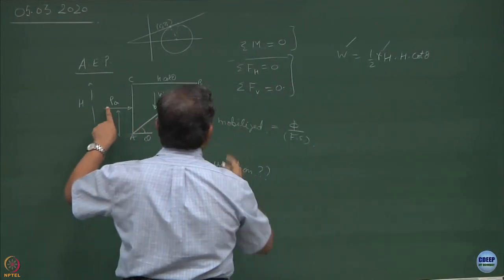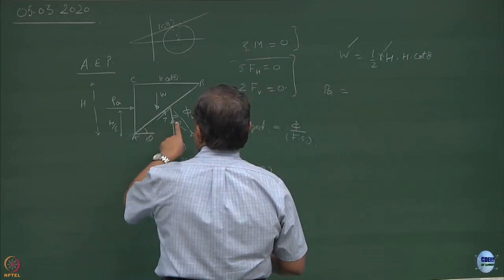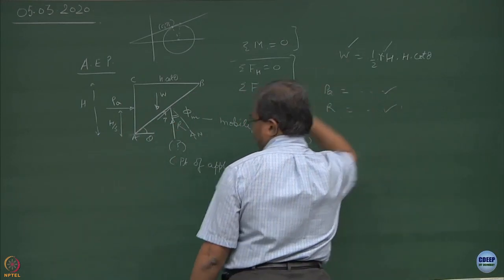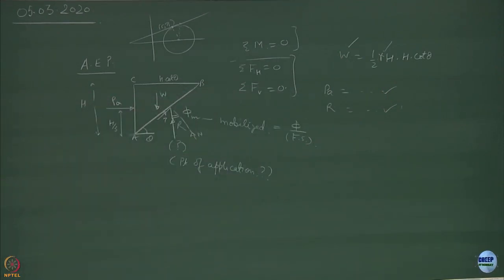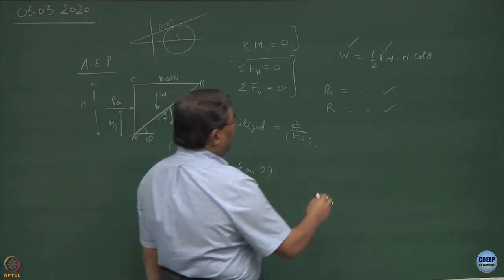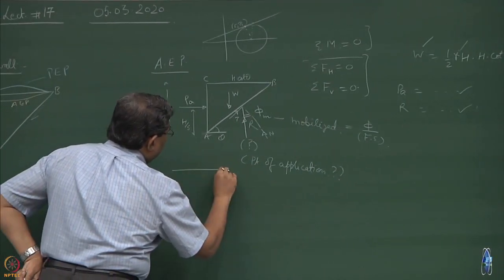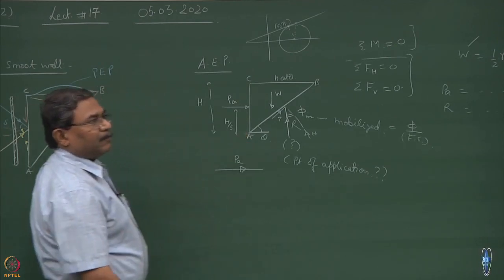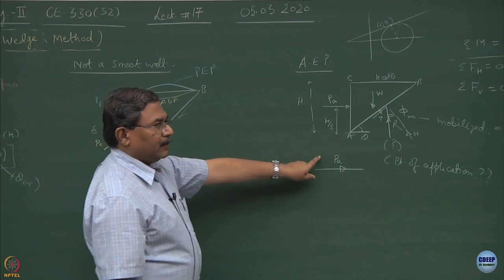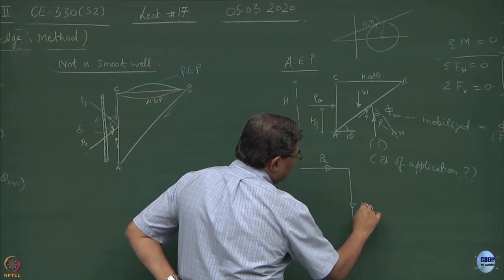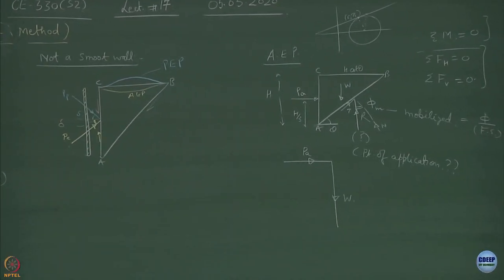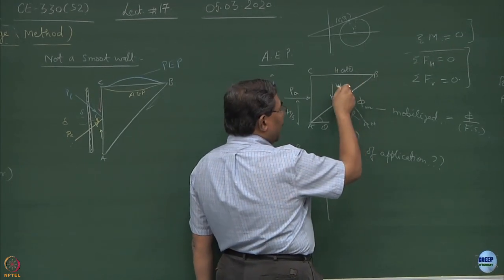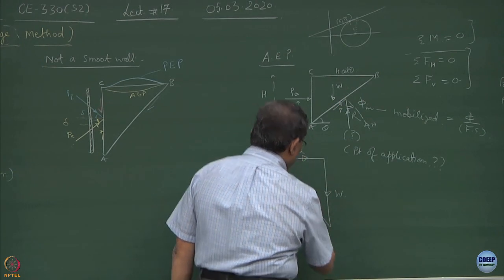What is the other equation I will get? If I say sigma F-horizontal equals zero, I will get PA equal to something — you can resolve this and compute it. Similarly, you will get R equal to something. It is a very complicated method. So what we will do is go for a simplified way — draw the force diagram. PA is acting horizontally, W is acting vertically downward, and where is the third force balancing these two? That is R — the reaction mobilized on the slip surface balancing W and PA.